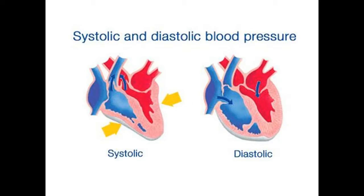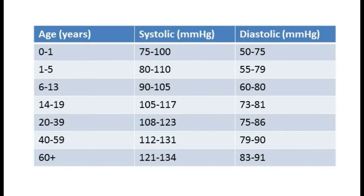First, we will explain physiologically how blood pressure is measured. Blood pressure is recorded as systolic over diastolic pressure. Systolic pressure is the peak blood pressure when the heart is contracting. Diastolic pressure is the lowest blood pressure when the heart is relaxing and refilling with blood. Pressure is recorded in millimeters of mercury. Typical adult blood pressure is 120 over 80 millimeters mercury.